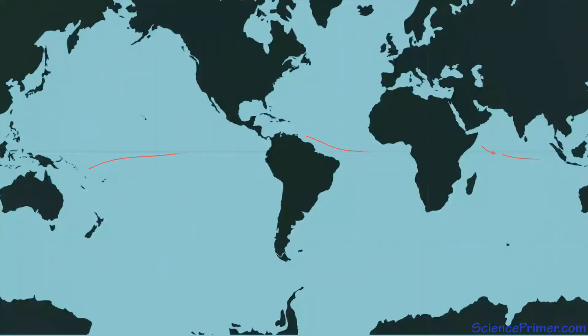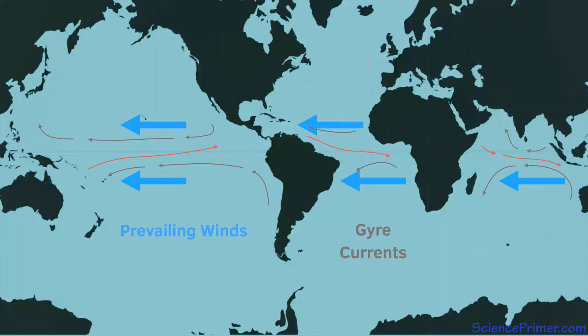Surface currents flow west to east along the equator. These currents are called equatorial counter currents because they flow against the direction of the prevailing winds and opposite the direction of the currents that flow on either side of the equator around the large central gyres.